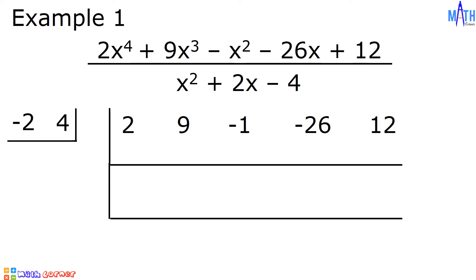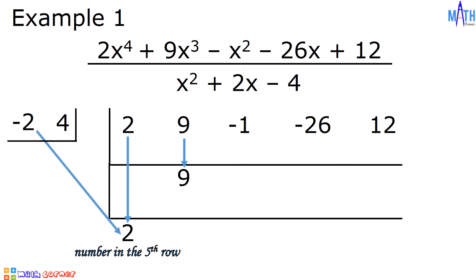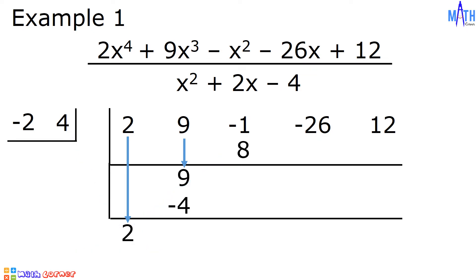Let us divide. Bring down the first coefficient in row 5, and bring down the second coefficient in row 3. If we multiply negative 2 by 2, we write the answer in row 4. Negative 2 times 2 is equal to negative 4. If we multiply 4 by 2, we write the answer in row 2. 4 times 2 is equal to 8. Then we will add. 9 plus negative 4 is equal to 5. Negative 1 plus 8 is equal to 7.